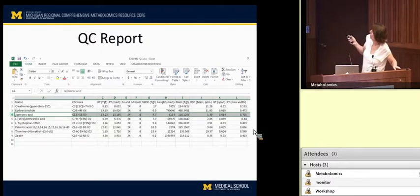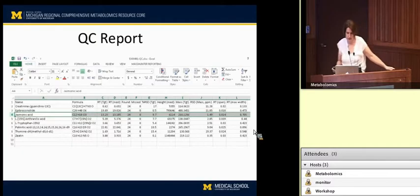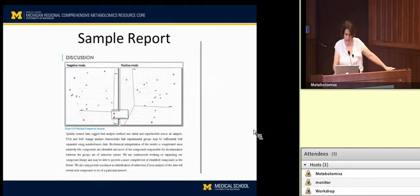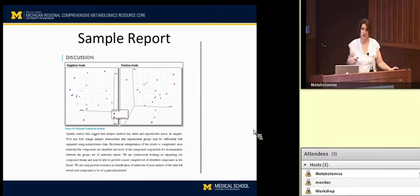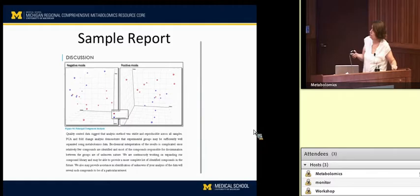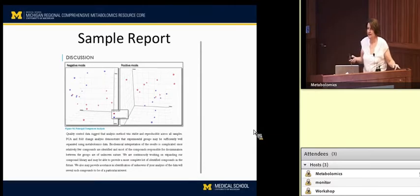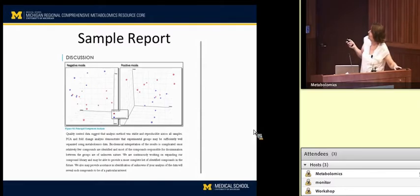Your report will also contain QC information about all the standards that were run and their RSDs within all of the samples. Sasha Raskin, who does the data analysis, will go through and do some preliminary statistics on your samples. You can always meet with him and talk about the results, or as other speakers have suggested, start working with a statistician who can collaborate with you on your studies to get statistical support.